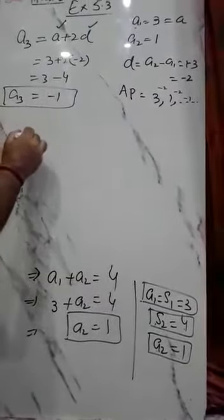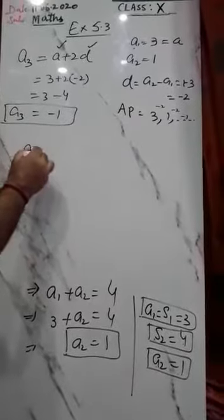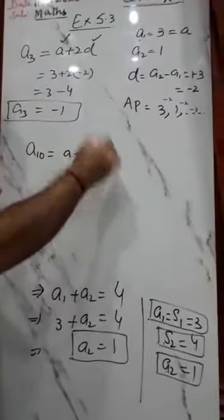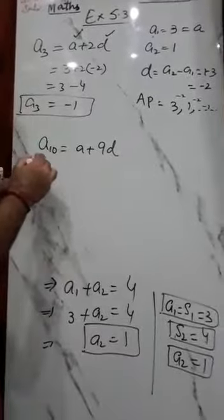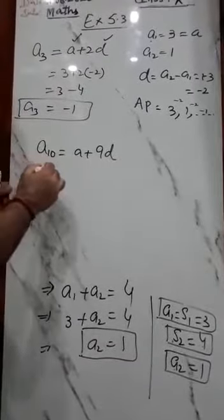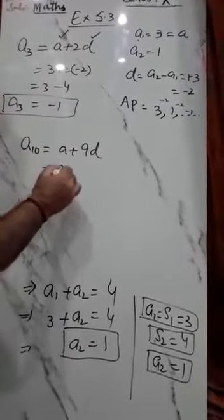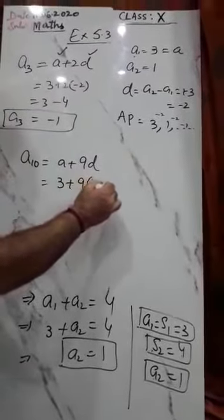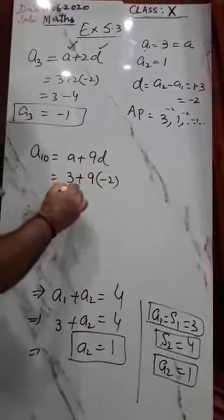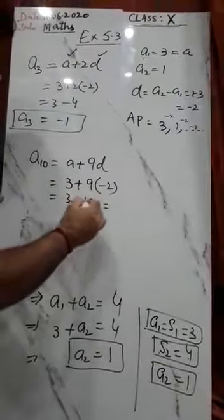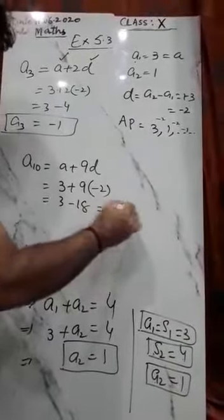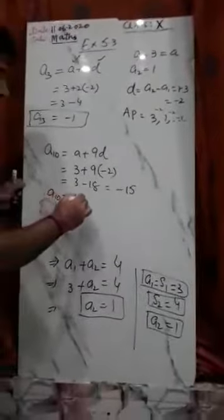Now we also need to find the 10th term. A10 = A + 9D. A = 3, D = -2. So A10 = 3 + 9×(-2) = 3 - 18 = -15. So A10 = -15.